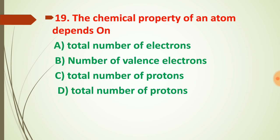Question number twenty: valency of lead. Some elements have two or three valencies. Lead is one such element — its valency is both 2 and 4. So option D, 'both A and C,' is the correct answer for question number twenty.